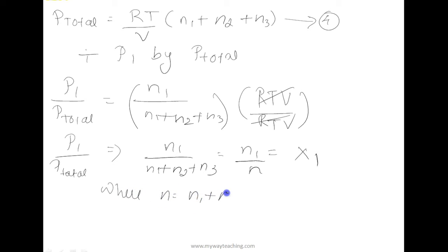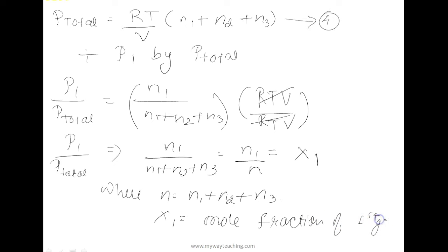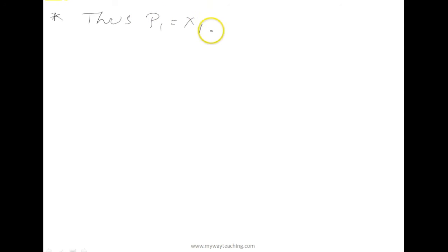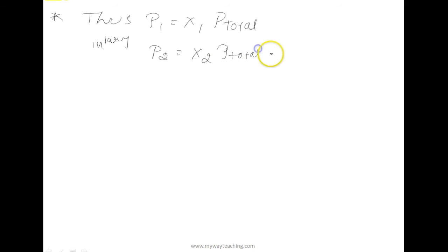Here x1 is called the mole fraction of the first gas. Thus, P1 equals x1 times P_total. Similarly for the other gases, P2 equals x2 times P_total and P3 equals x3 times P_total.